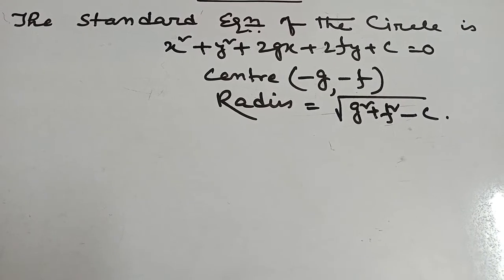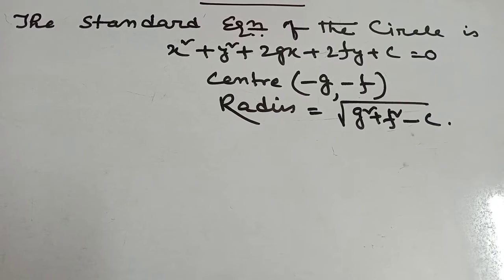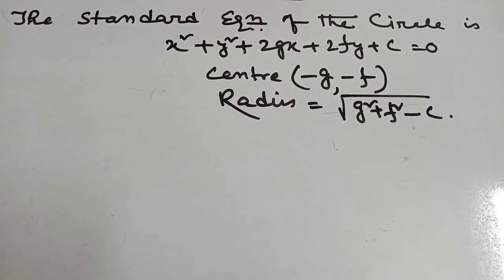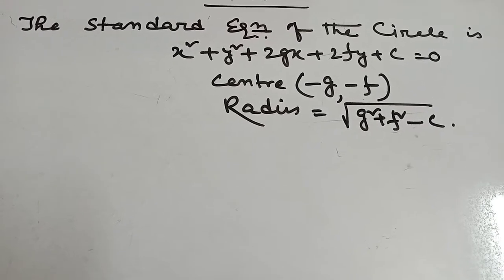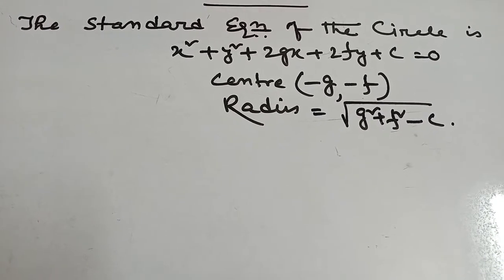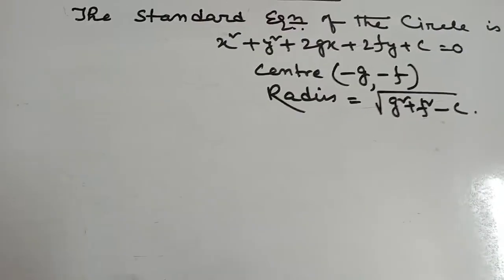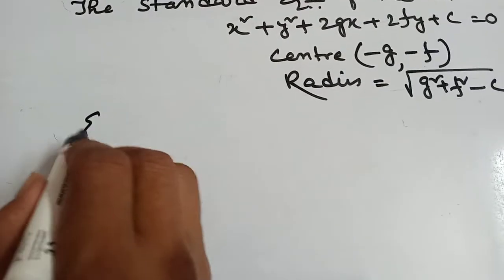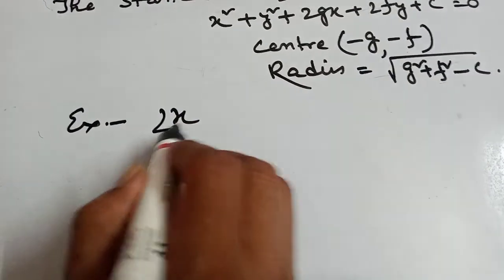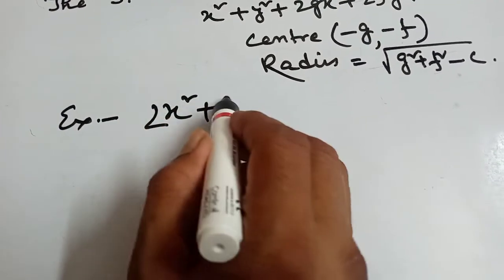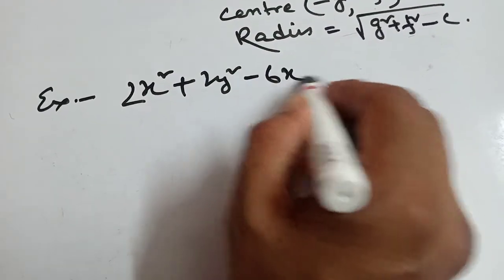Hence, the center will be (−g, −f) and radius = √(g² + f² − c). Now, example: 2x² + 2y² − 6x + 10y − 6 = 0.